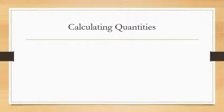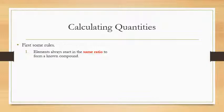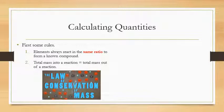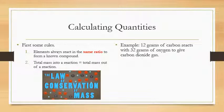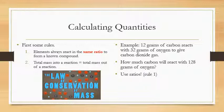Now we can use chemical equations to calculate quantities. The key rules are: elements always react in the same ratio to form a known compound, and the total mass going in equals the total mass going out (conservation of mass). For example, 12 g of carbon react with 32 g of oxygen to give carbon dioxide. How much carbon will react with 128 g of oxygen? Using ratios: 128/32 = x/12, so 4 = x/12, therefore x = 48 g of carbon.